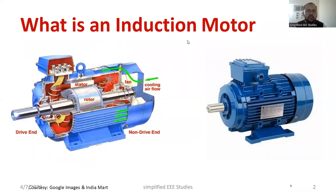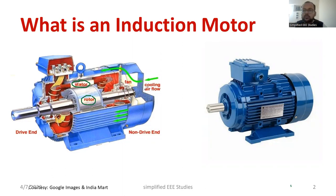You can see a pictorial view of an induction motor. The main components of induction motors are the stator and another part called the rotor. There are also some supplementary or auxiliary mechanisms — there is a fan, a shaft, an outer covering, a driving end and a non-driving end.